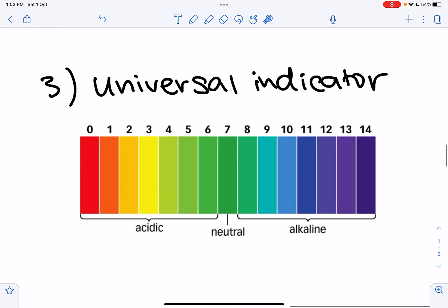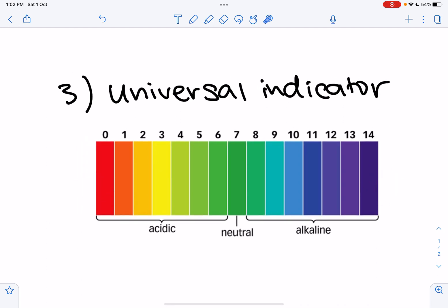And lastly, universal indicator, which is just a scale from 0 to 14. So from 0 to 7, you have your acidic. From at 7, you have neutral. And from 8 to 14, you have alkaline. So if the range falls maybe somewhere between 0 and, let's say, 3, it is most likely a strong acid. From anywhere like 3 to 7, you will have a weak acid. And then you have neutral. Anywhere from around 8 to 11 would be a weak base or alkaline. And then from around 11 to 14, you have a strong base.